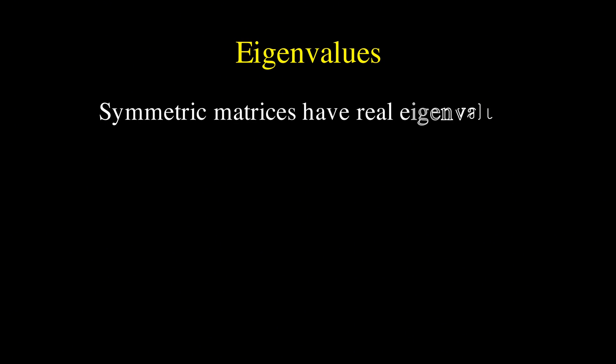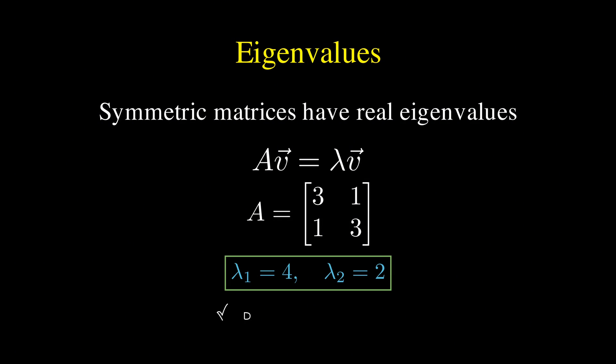Now here is where things get interesting. Symmetric matrices have real eigenvalues, which is a powerful guarantee. Remember that eigenvalues are solutions to the equation A times V equals lambda times V, where lambda is the eigenvalue and V is the eigenvector. For a symmetric matrix, like our simple 2x2 example with 3 on the diagonal and 1 on the off-diagonal positions, the eigenvalues turn out to be lambda 1 equals 4 and lambda 2 equals 2. Both of these numbers are real numbers, not complex, and this is always true for symmetric matrices.